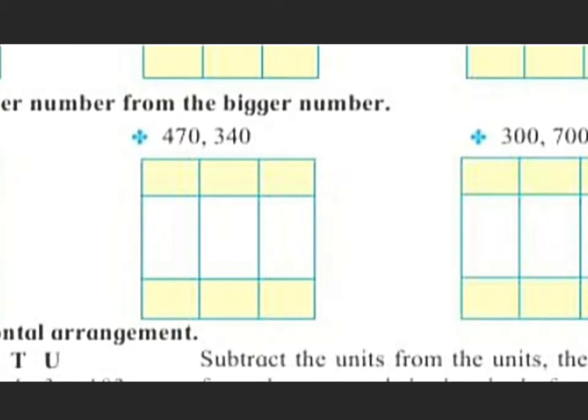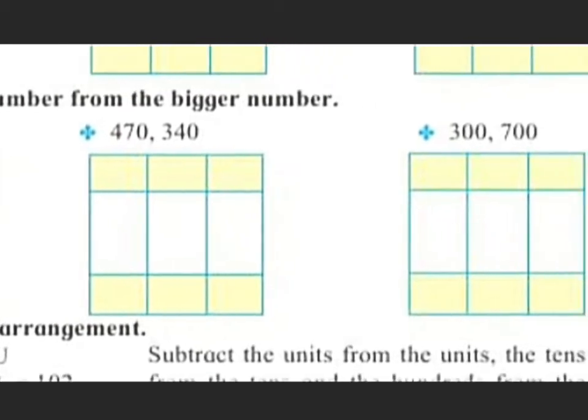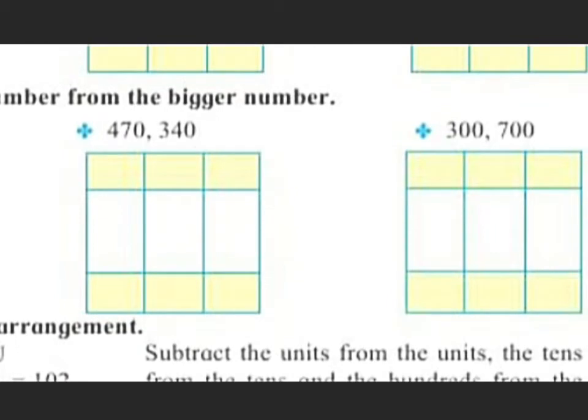So you have to write the example as 470 minus 340. Just write vertically and solve this example. Here are two numbers: 300 and 700. Since 300 is smaller than 700, you have to minus 300 from 700, so the example will be 700 minus 300.